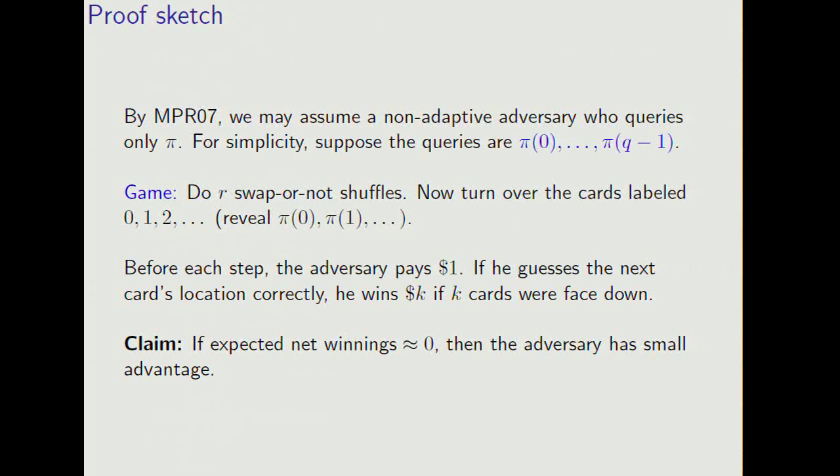Now let me give a sketch of the proof. So by the Maurer, Pietrzak, and Renner result, we can assume a non-adaptive adversary who makes forward queries. Now suppose for simplicity that he queries 0, 1, 2, 3, and so on.